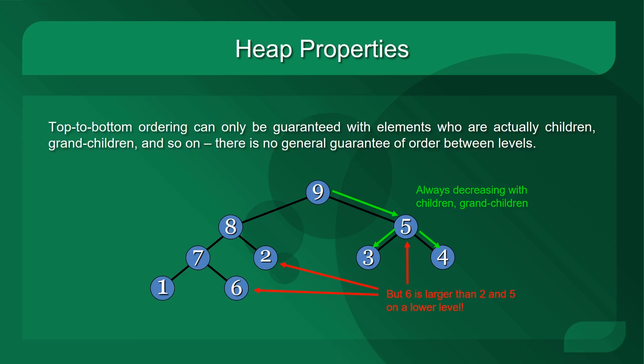The key word with heaps is semi-ordered. This property is what makes them so efficient and useful, so it's worth looking closely and seeing exactly what this means. In a max heap, the largest element will be on top. This semi-ordering guarantees that top-to-bottom ordering is only guaranteed with elements who are actually children, grandchildren, and so on of a particular element. Otherwise there is no general guarantee of order between the levels.